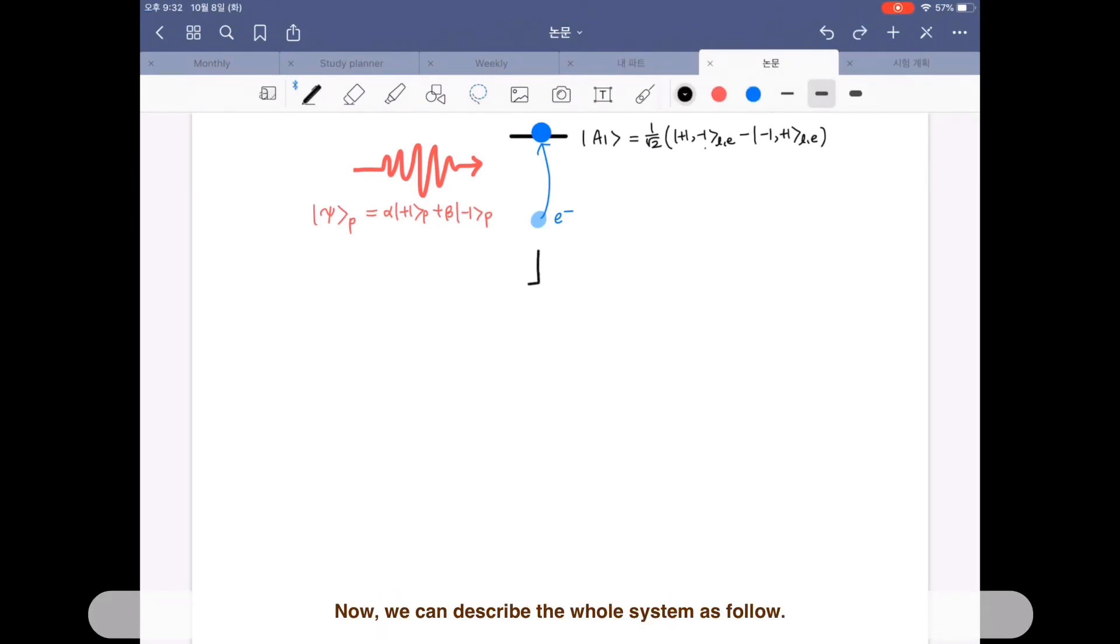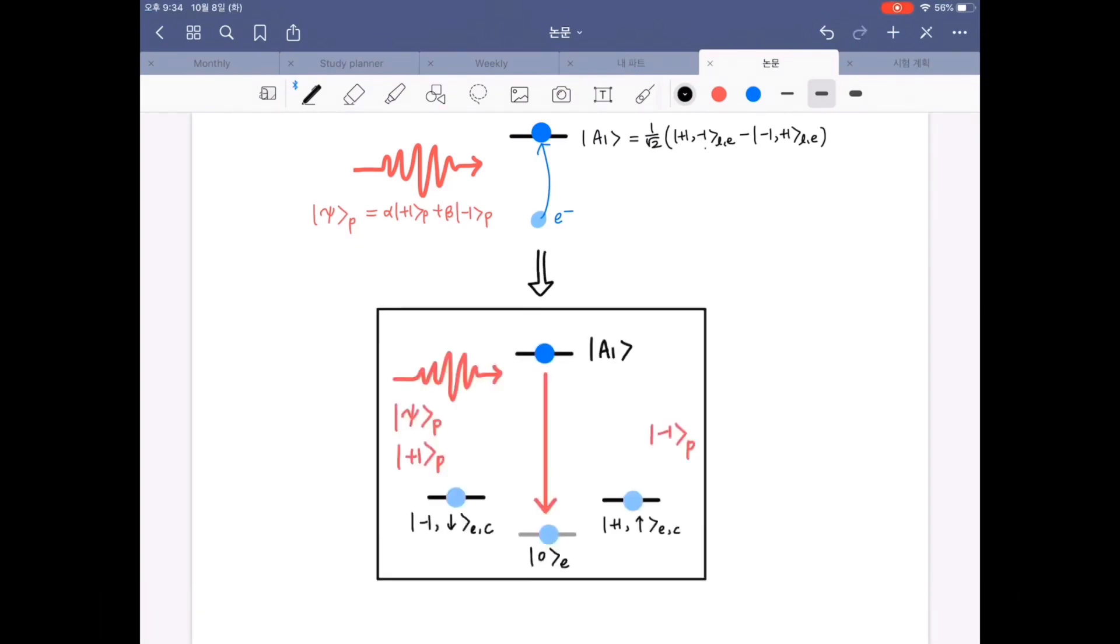Now we can describe the whole system as follows. These two are an entanglement between electron and carbon nuclear spin. By absorption of photon into the entangled electron, it excites into eigenstate A1.